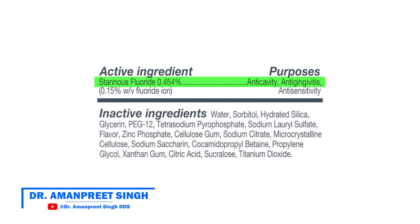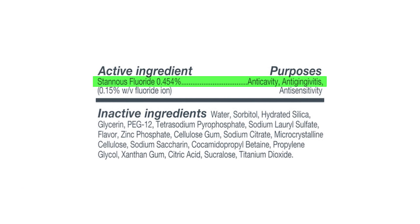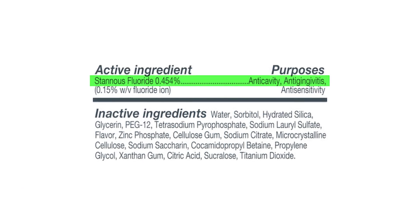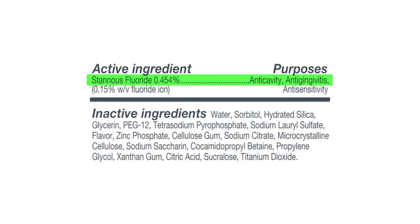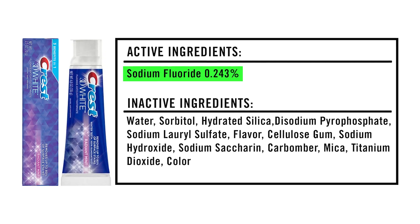Did you know that there are different types of fluoride that can be in your toothpaste? If you look at the back of your tube of toothpaste, you might see one of two common active ingredients: either stannous fluoride or sodium fluoride. In this video, I'm going to break down the key differences between these two different types of fluoride so that you can help figure out which one is best for you.